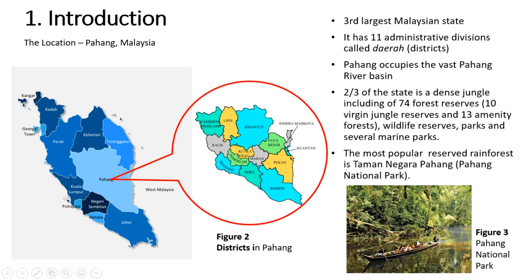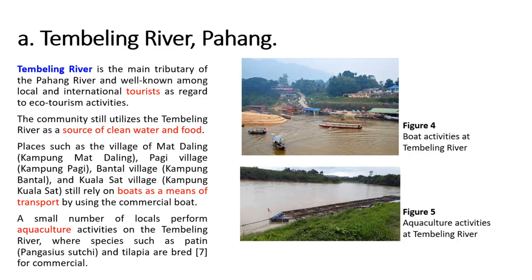Tembeling River is the main tributary of the Pahang River and is well-known among local and international tourists for core tourism activities. The community in Tembeling River still utilises the river as the main source of clean water and food. There are a few residential areas — the villages of Magdaling, Pagi, Bantal Village, and Kuala Saj — which still rely on boats as their means of transportation. A small number of locals also perform aquaculture activities, breeding fish species such as patin and tilapia for commercial use.